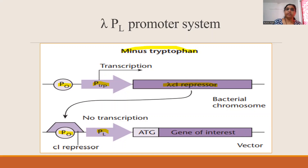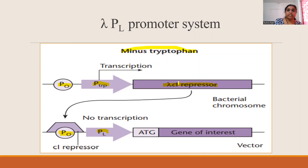The CI repressor then binds to the operator of PL, and there will be repression of the gene of interest — transcription from PL is inhibited. But when we want expression of the gene, the CI repressor should not be synthesized. To inhibit CI expression, tryptophan is added to the medium.